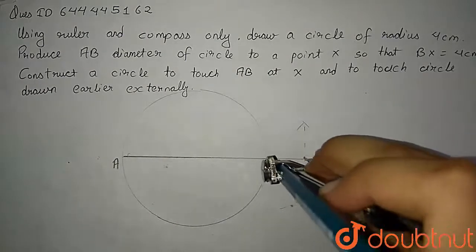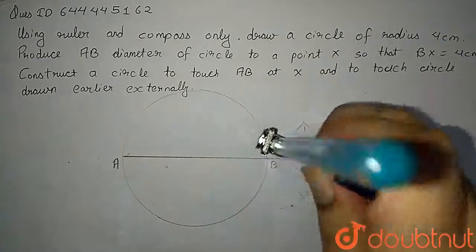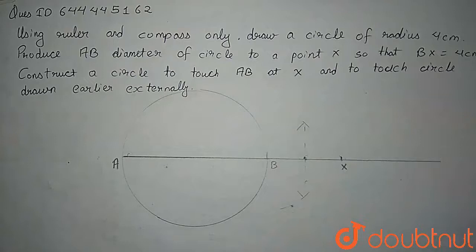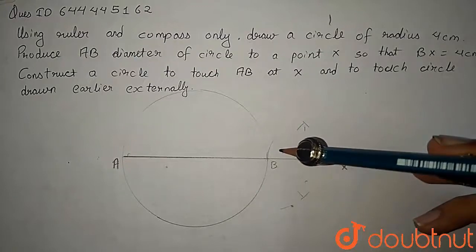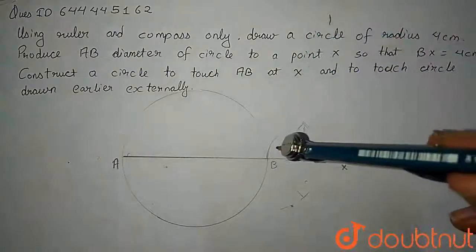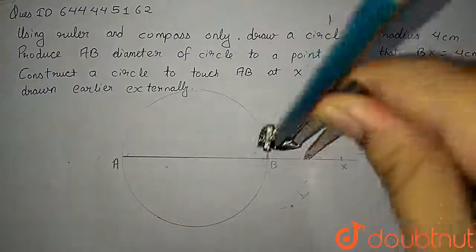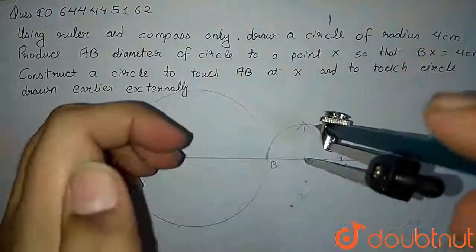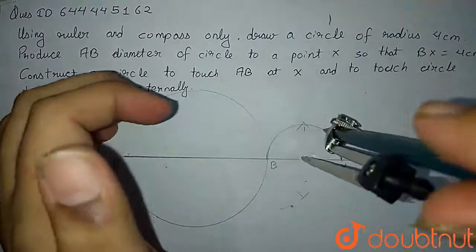I'm keeping my tip here and with this as radius. So by keeping the tip of my compass here, I am drawing a circle which is passing through this point X.